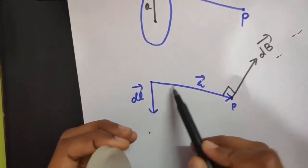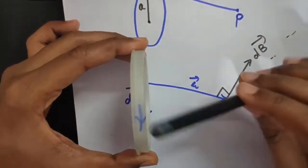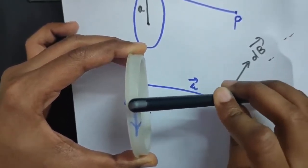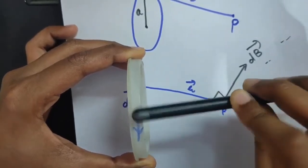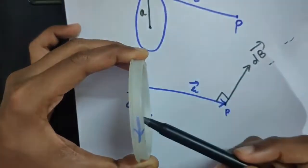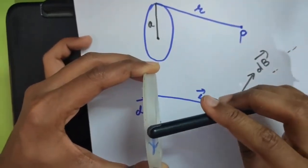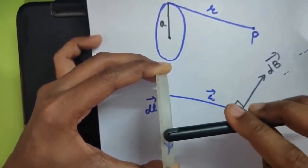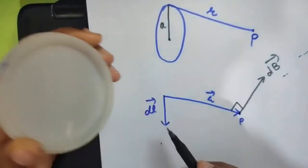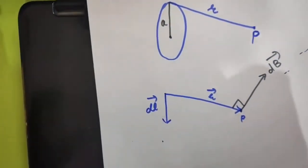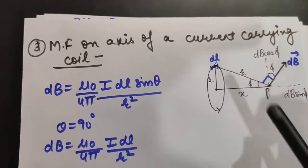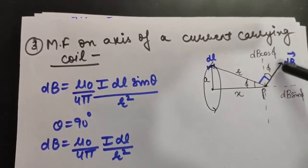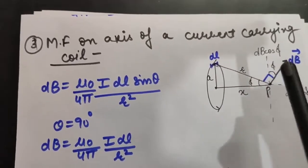What will be the angle between DL and R? Look here — this is DL and this is R. There is always a confusion here: the angle is changing with this, but the angle between DL and R is always 90 degrees. This angle is always 90 degrees; only the other angle is changing. Therefore, the angle between DL and R will always be 90 degrees.